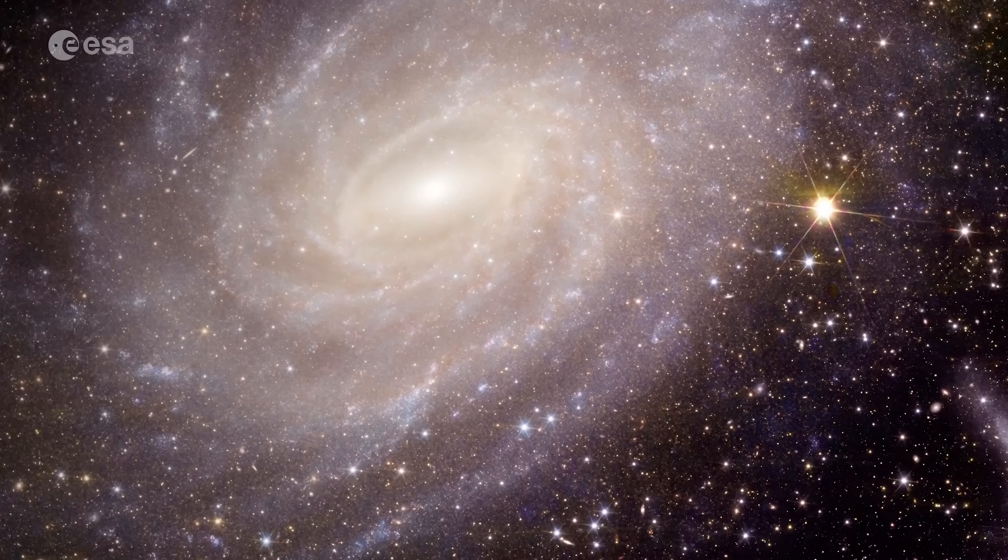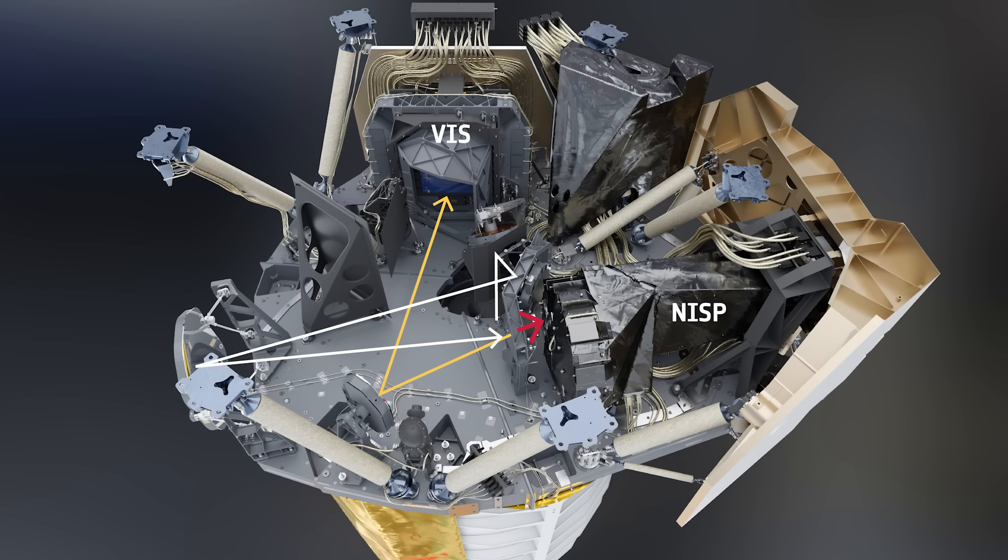It splits the light into two paths, visible and infrared, and sends it to two advanced instruments on board.